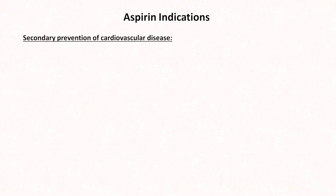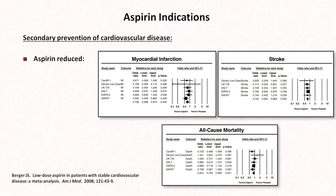Next is the secondary prevention of cardiovascular disease. A meta-analysis in patients with known cardiovascular disease randomized to aspirin or placebo found that aspirin reduced rates of MI, stroke, and all-cause mortality. Comparison of doses indicates that low doses of 75 or 81 mg daily are likely as effective as higher ones and associated with fewer side effects. There is some variability in practice as to when the dose should be lowered after an acute cardiovascular event.